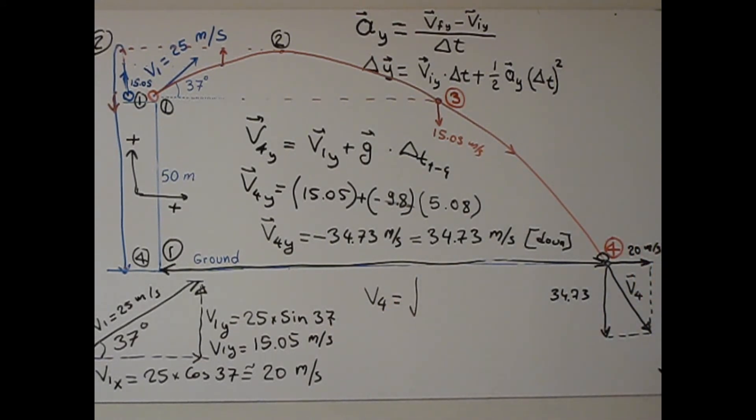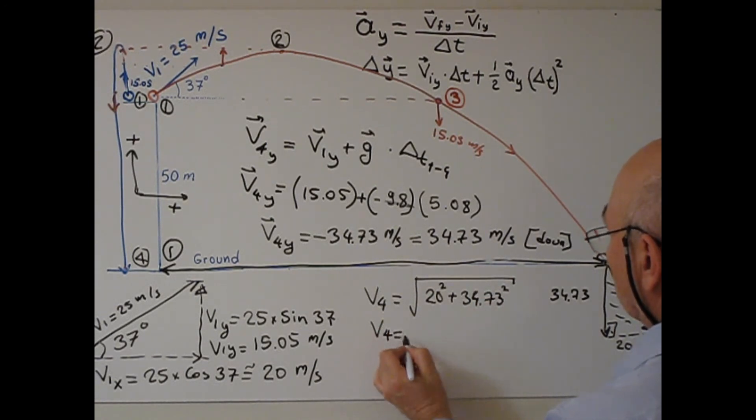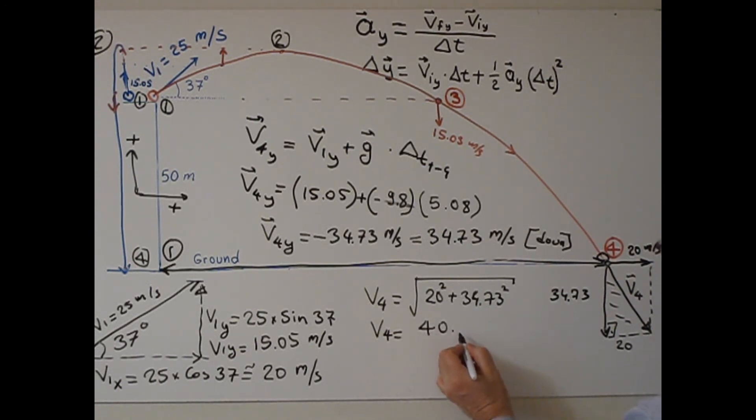How can we calculate the magnitude of v4? We use the Pythagorean theorem. This triangle is a right triangle, 90 degrees, so basically 20 squared plus 34.73 squared, then square root. The magnitude of the velocity is 40.06 meters per second.